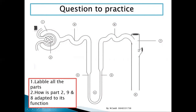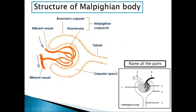You should be able to answer questions on this and know how to label each and every part. Do not go to the exam without knowing this structure. The efferent vessel takes blood away, the afferent vessel brings blood in, the Bowman's capsule surrounds the glomerulus, the glomerulus branches inside, and together they form the Malpighian body. You also have the renal tubules and the capsular space — the space inside the Bowman's capsule.